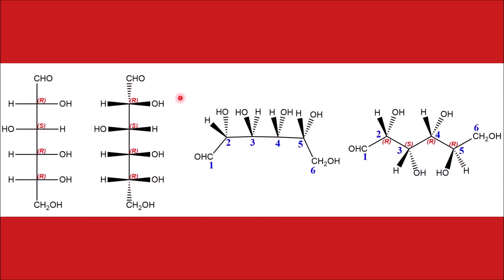Now, if we want to convert this wedge-dash formula into a typical zigzag bond-line formula, if you turn this molecule to the right and view it, the aldehyde group will be at the bottom. The groups on the right — which are out of the plane of the paper — after rotation will go away from us, and the groups on the left will remain out of the plane of the paper.